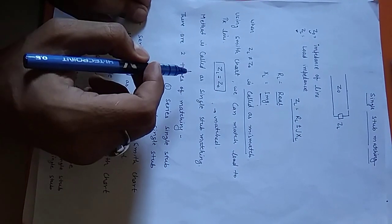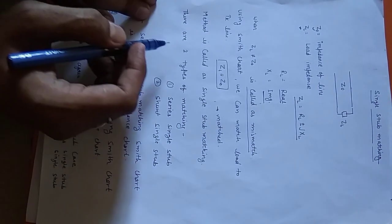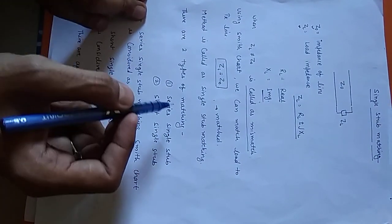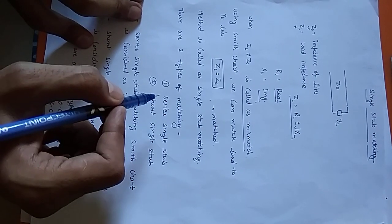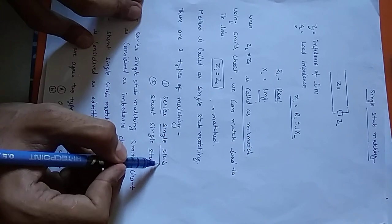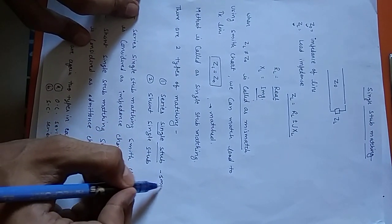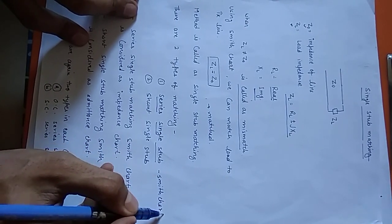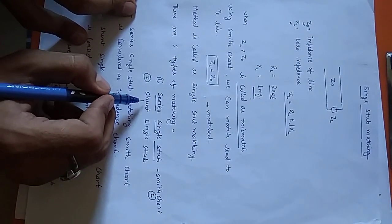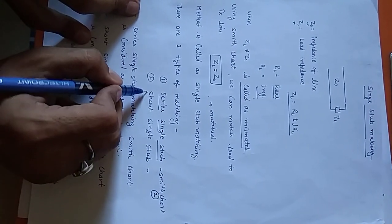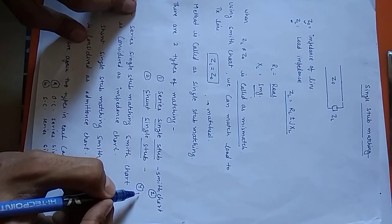There are several methods we can use to match the load to the transmission line. Depending upon series and shunt configuration, we can divide matching into two types. The first is called series single stub matching — when doing series single stub matching, the Smith chart acts as an impedance chart. The second type is shunt single stub matching — when using shunt single stub matching, the Smith chart is called an admittance chart or Y chart.